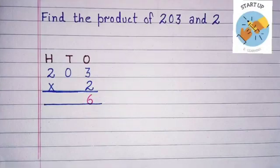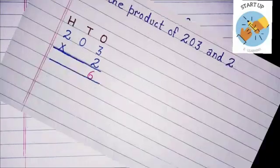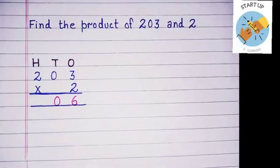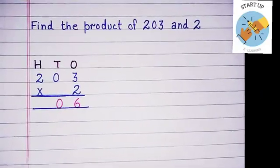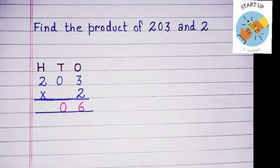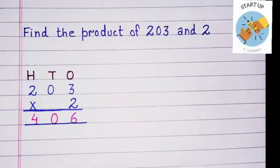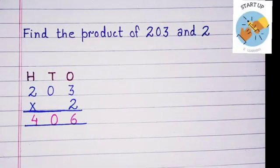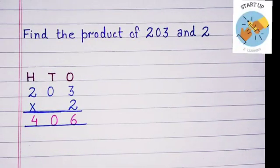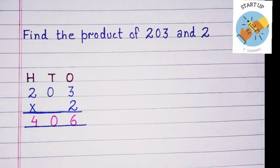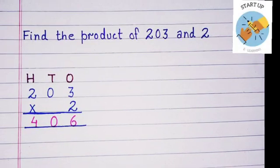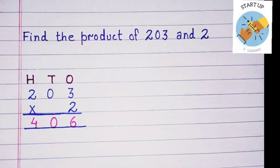Let's start the multiplication — always remember we start from the 1's place. 2 multiplied by 3 is equal to 6; 6 will be written under the 1's column. 2 multiplied by 0, which is at the 10's place, is equal to 0; we will write 0 under the 10's place. Let's multiply 2 by 2, which is at the 100's place: 2 multiplied by 2 is equal to 4. So the product of 203 multiplied by 2 is equal to 406.